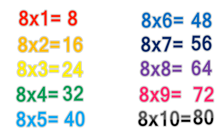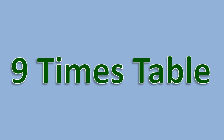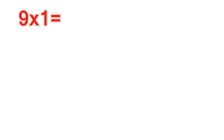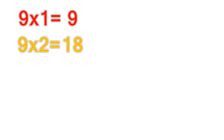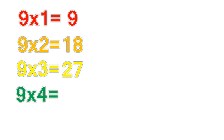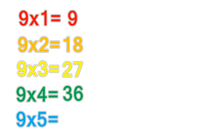9 times table. 9 times 1 equals 9. 9 times 2 equals 18. 9 times 3 equals 27. 9 times 4 equals 36. 9 times 5 equals 45.